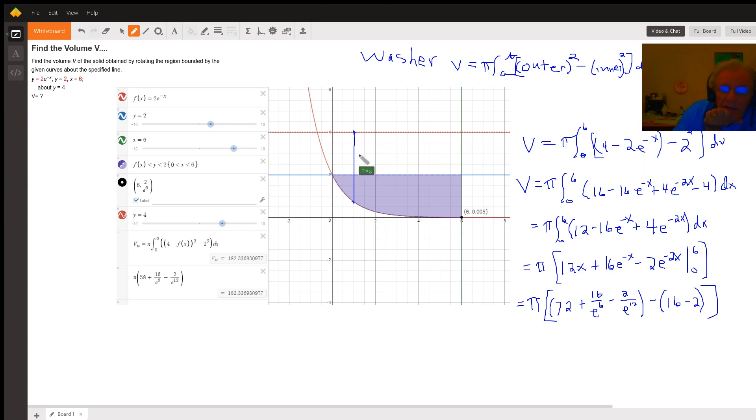Now, how do you represent that distance? Well, for this value x right here, this distance right here is f of x, or 2e to the minus x. So I want to subtract that from 4, or top minus bottom will give you the outer radius.